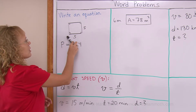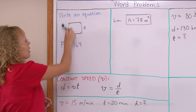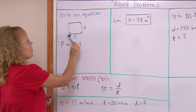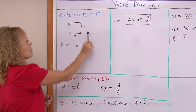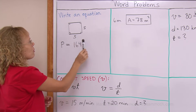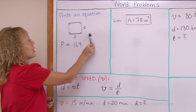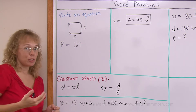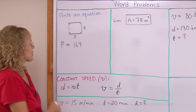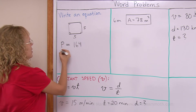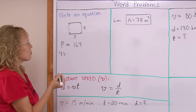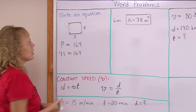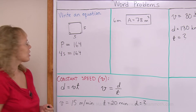Perimeter means you go all the way around, and that's 164. Write an expression for the perimeter — you go all the way around. It is S plus S plus S plus S, or 4 times S. So 4 times S is the expression, and that has to equal 164. That is our equation.